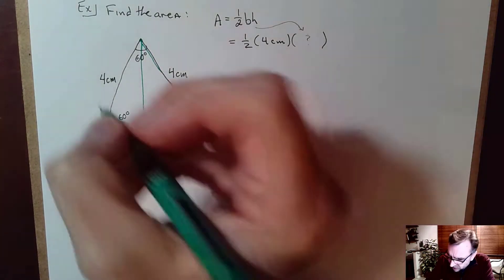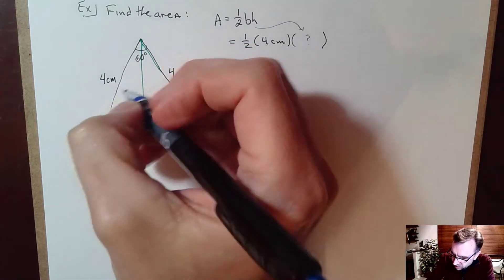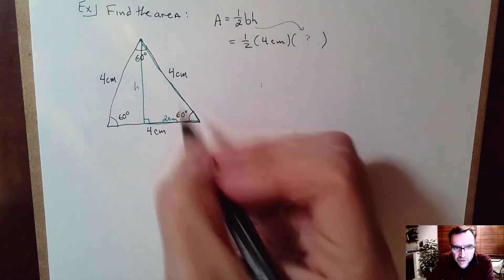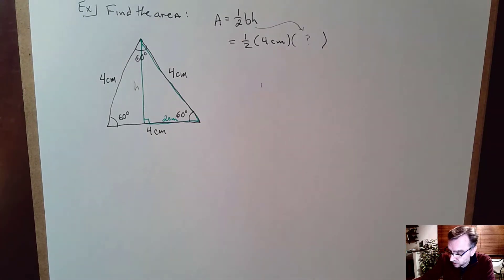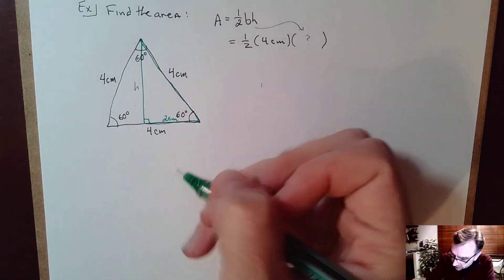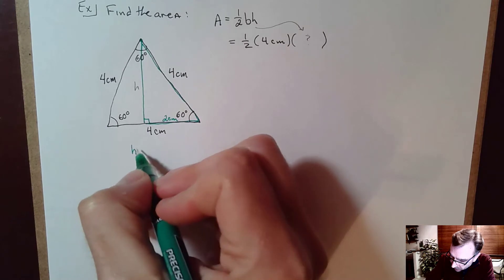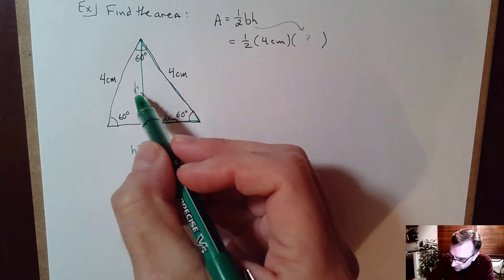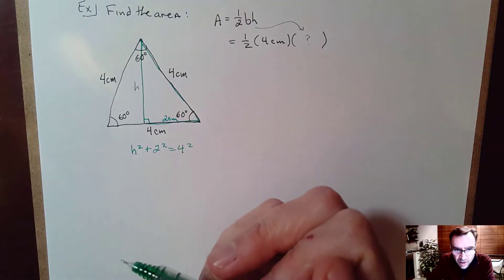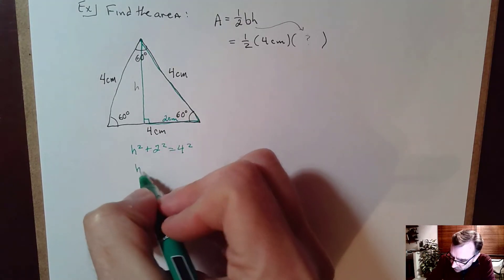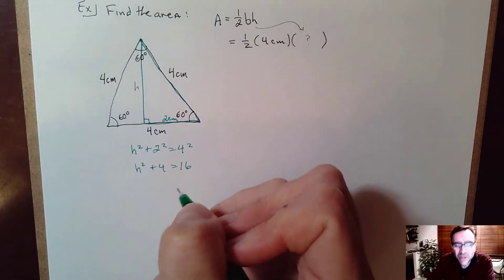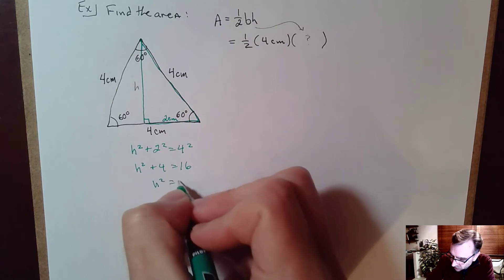There are a number of ways to find the height here — we can use trigonometry, or in this case I think we can just use the Pythagorean theorem. For this green triangle, leg squared plus leg squared equals the hypotenuse squared. So H squared plus 2 squared equals 4 squared, and 4 is the hypotenuse. That gives me H squared plus 4 equals 16.